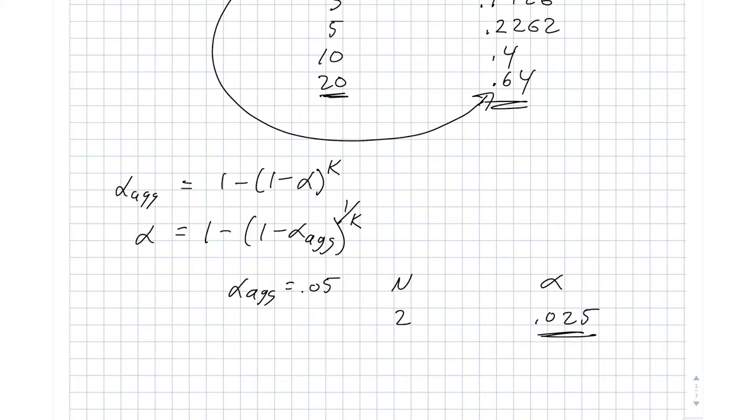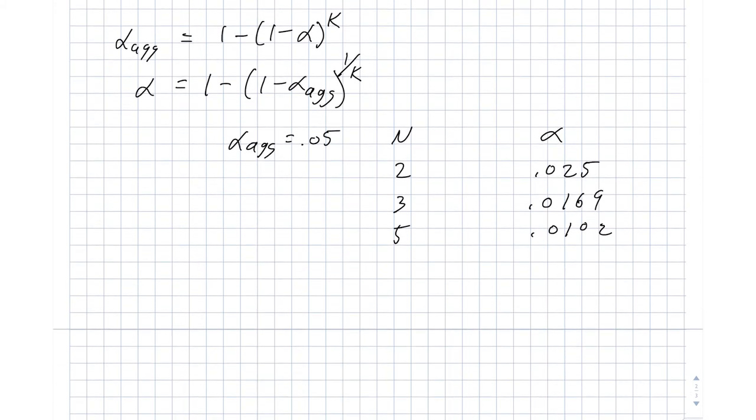So now what happens as n starts to get larger? So 3 becomes 0.0169, 5 becomes 0.0102, 10 becomes 0.005116, and 20 becomes 0.00256.